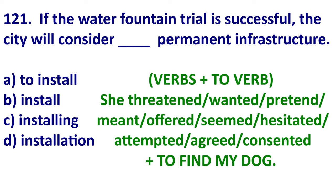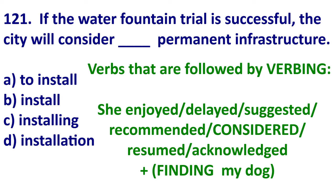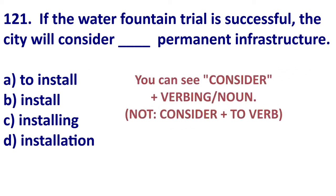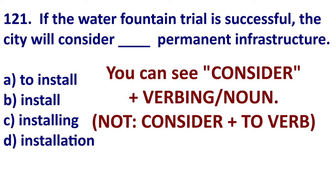Here are some verbs that are followed by a noun or to-verb infinitive. For example: she wanted to find my dog, not finding my dog. Or: she hesitated to find my dog, not finding my dog. And here are some verbs that are followed by verb -ING. For example: she enjoyed finding my dog, not she enjoyed to find my dog. You can see one of these words is 'considered.' After 'consider,' you will use a noun or verb -ING.